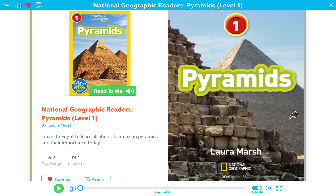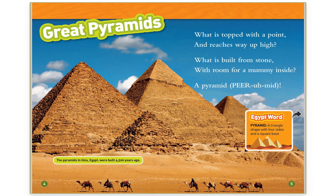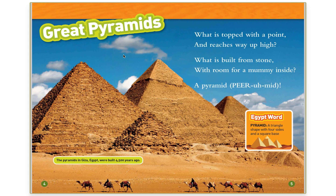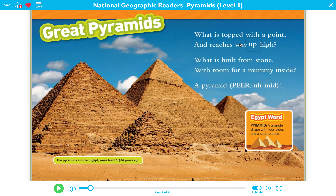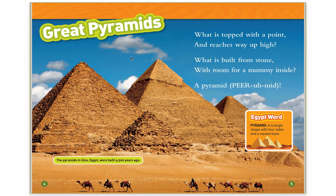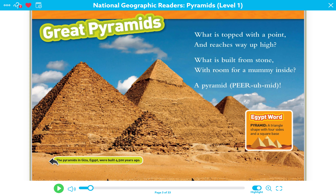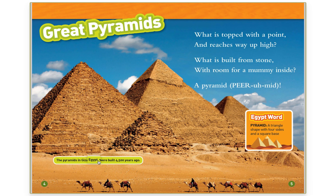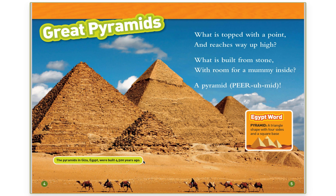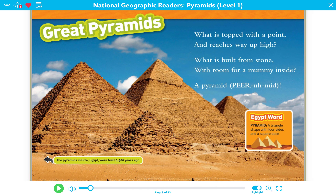In this non-fiction text about pyramids, you can see that the author made a similar choice. The heading, Great Pyramids, is one font, and then the main body text is another font. You can even see that the heading is bigger and in a different color to make it exciting to read. Also, if you look down at the bottom, you can see a caption underneath this picture: 'The pyramids in Giza, Egypt, were built 4,500 years ago.' Even the caption is written in a different text, and it has a background so that you can notice it.